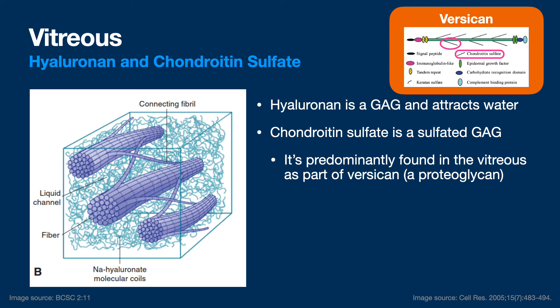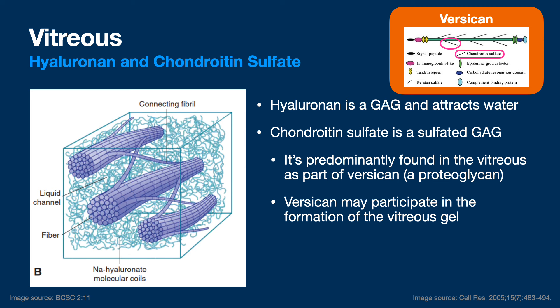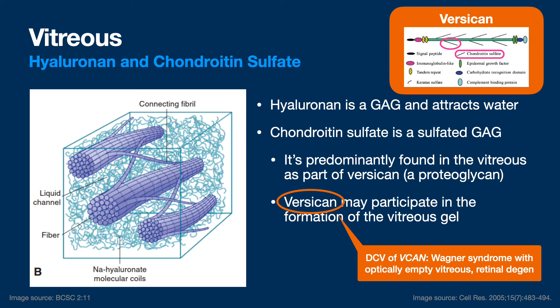Versican is a pretty big molecule with chondroitin sulfate chains. Does anybody know a particular retinal condition where versican is affected? The gene is called VCAN and it's basically involved in Wagner syndrome. Wagner syndrome used to be thought to predispose to retinal detachment, but for the most part it doesn't. It's not optically empty vitreous, and there's retinal degeneration — that's all you need to know about that.